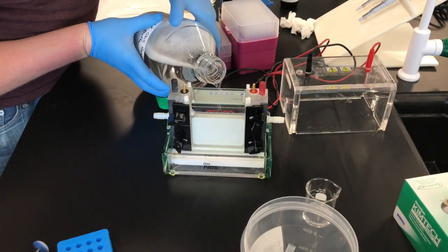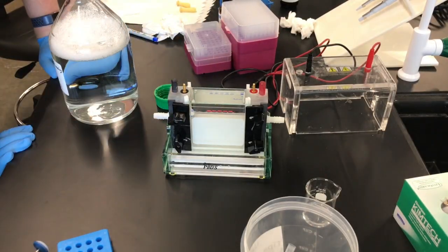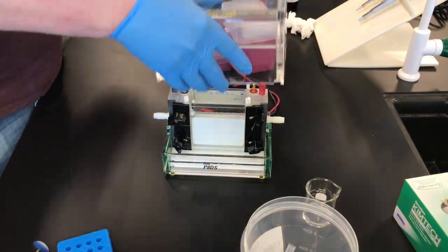Once you have loaded the samples, you can place the 1X buffer in the bottom chamber. Then, you can place the lid on, making sure that the red wires connect to the red terminals and the black wires to the black terminals.